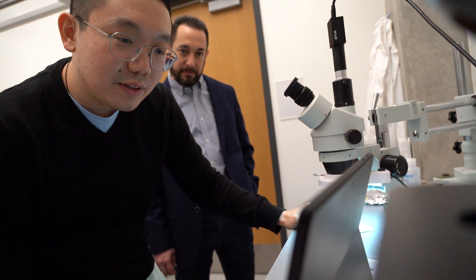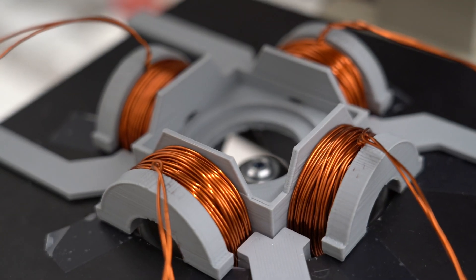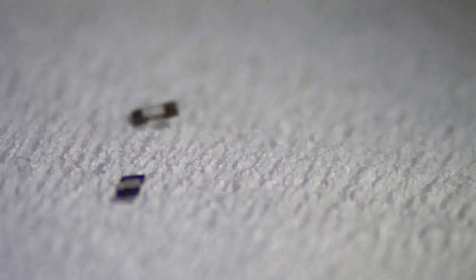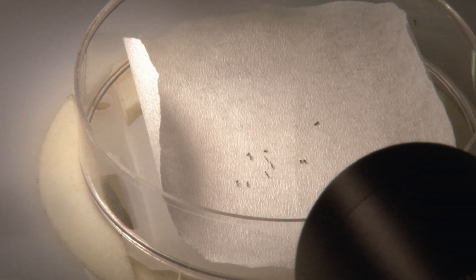So these robots are very small, so you can't put a battery on them. So we use magnetic fields to control these robots. As long as the robots have some kind of magnetic properties, we can control them using an external magnetic field.